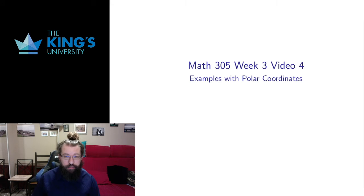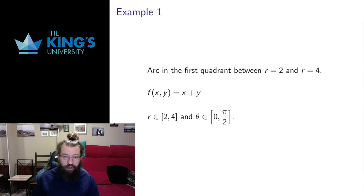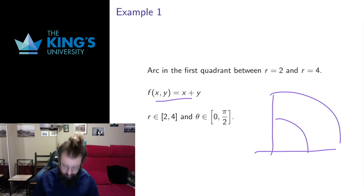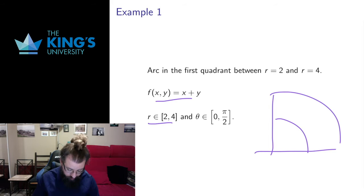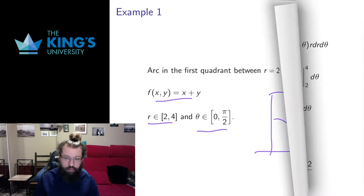Welcome to video 4 for week 3. In this video I'm going to go through a number of examples of integrals in polar coordinates. Say I have the function x plus y and I want to integrate in the first quadrant between radius 2 and radius 4. This is what I called an arc in the previous video. The bounds of the radius are 2 and 4, and to get the first quadrant I take the angle from 0 to pi over 2. This is a nice region with constant bounds in both variables.